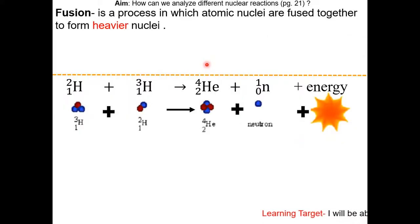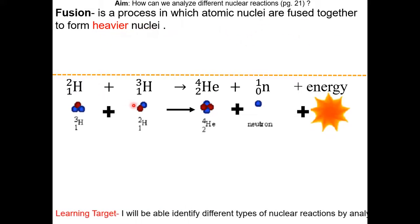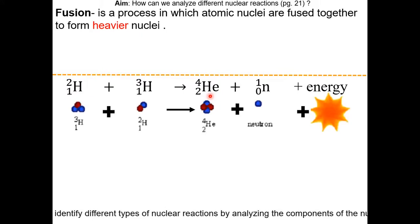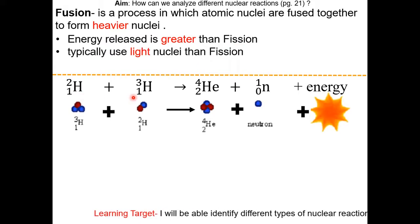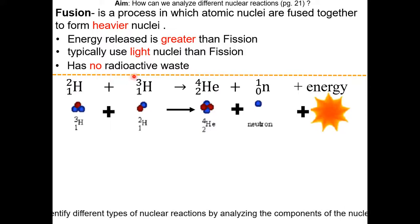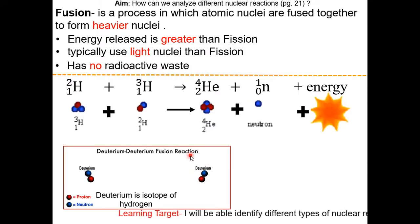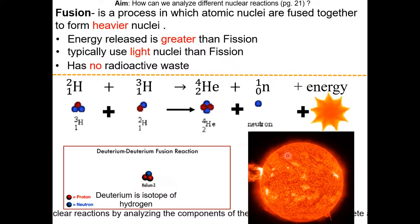Now we're going to discuss the two types of artificial transmutation: fusion and fission. Fusion is a process in which atomic nuclei are fused together to form a heavier nucleus. Here is an example — two small nuclei combine into one big nucleus, releasing energy. The energy released in fusion is greater than that of fission. Fusion reactions typically use small elements, and they produce no radioactive waste. Deuterium, an isotope of hydrogen, is an example, and fusion reactions also occur in the sun.